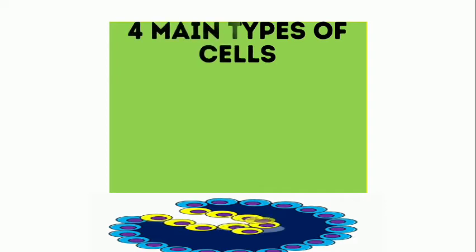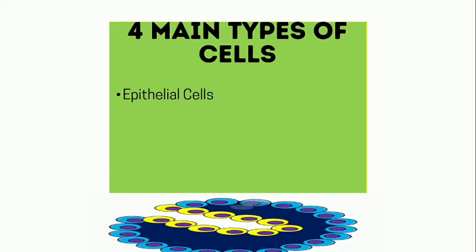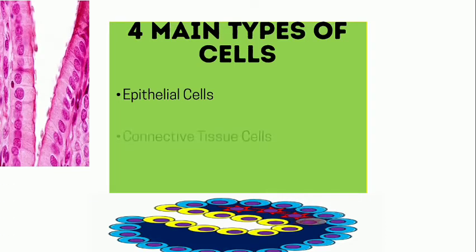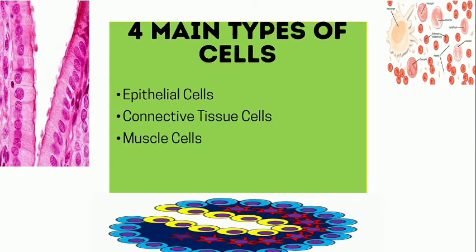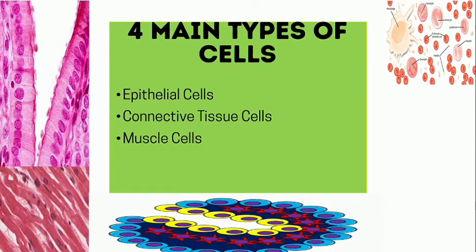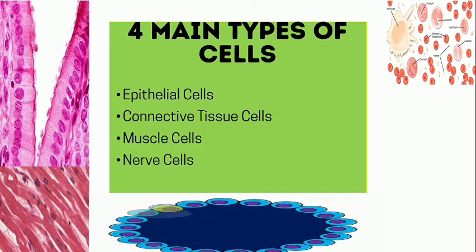There are hundreds of types of cells, but four main types are the following: epithelial cells, connective tissue cells, muscle cells, and nerve cells.